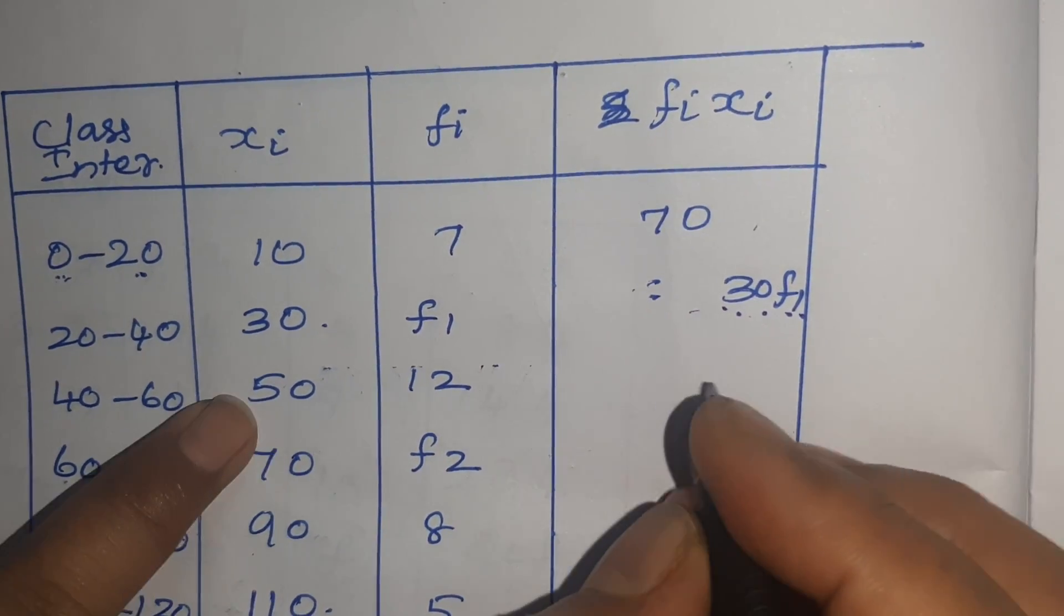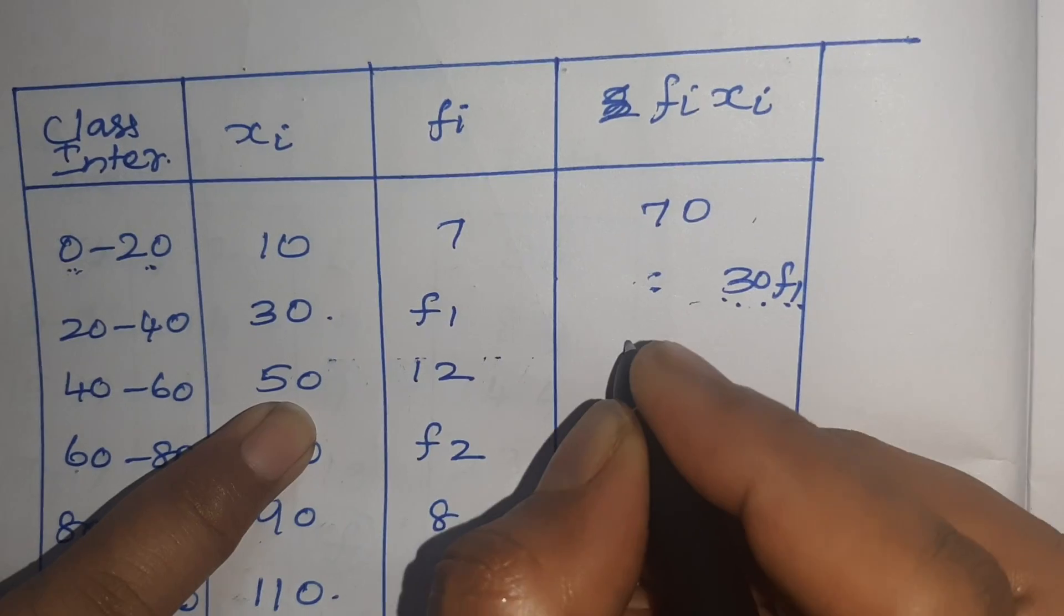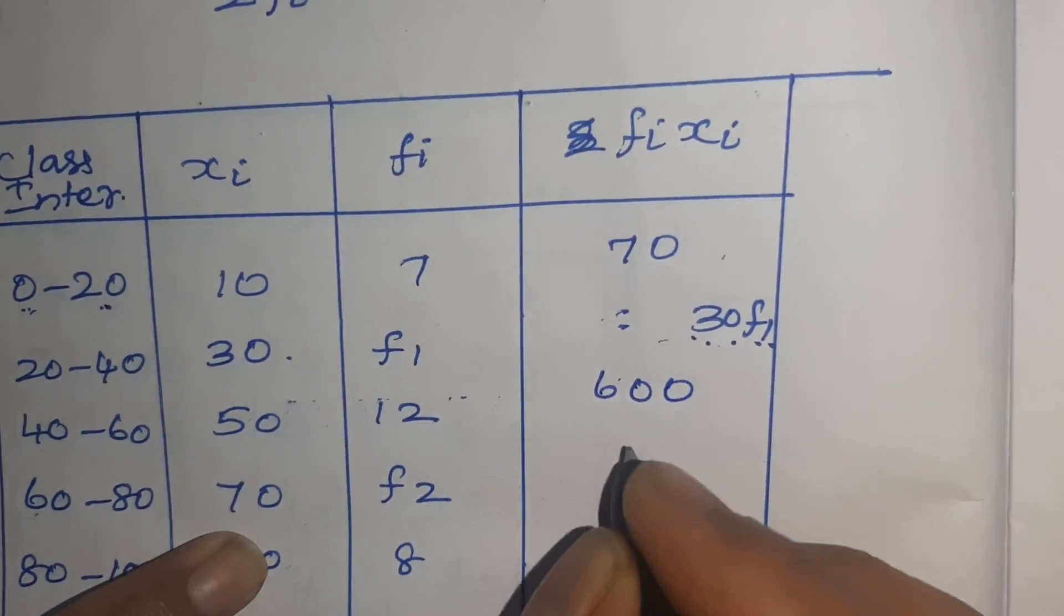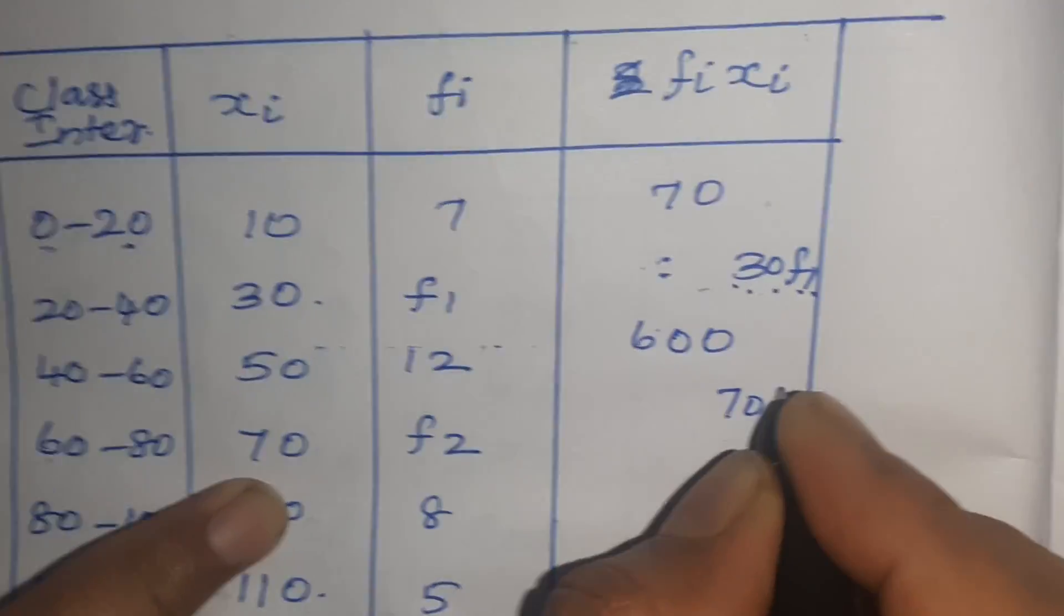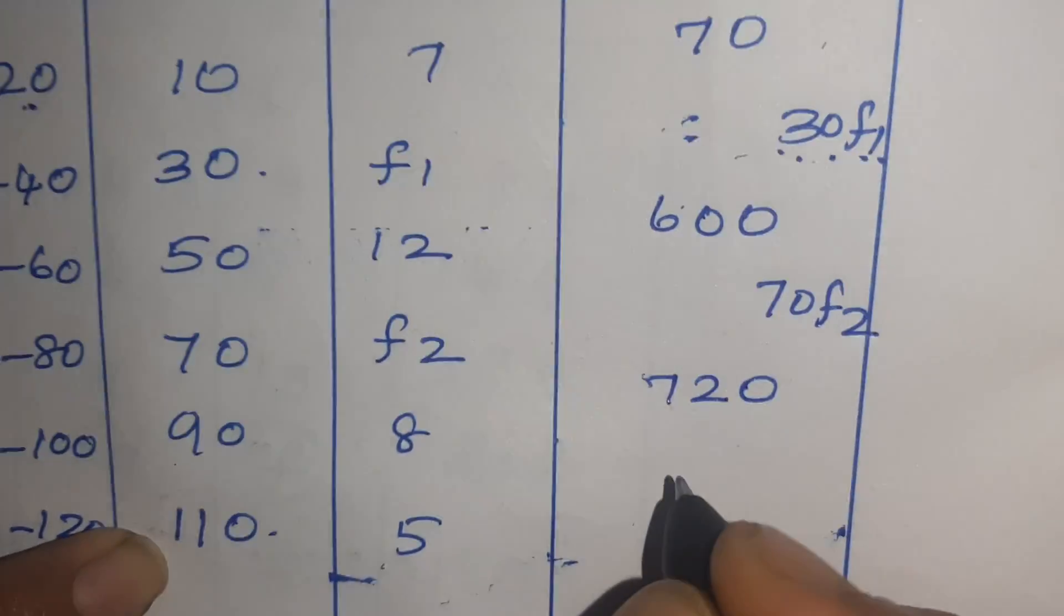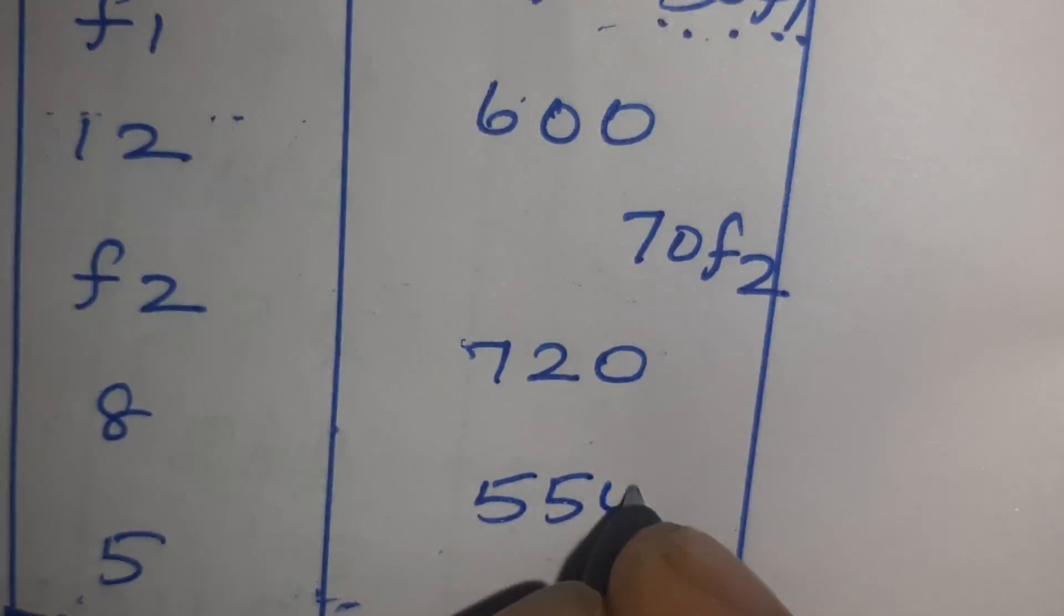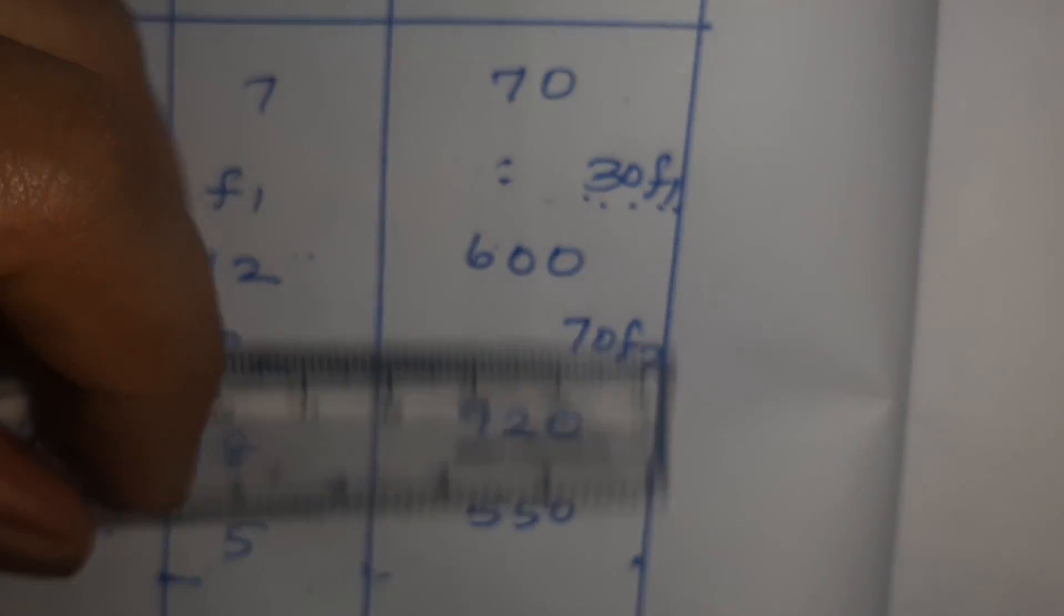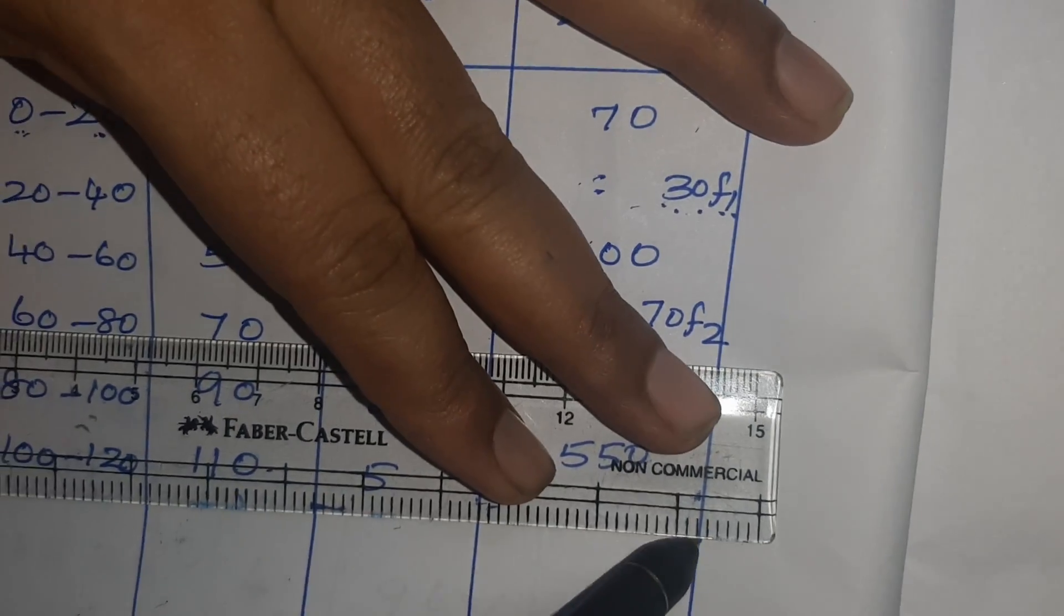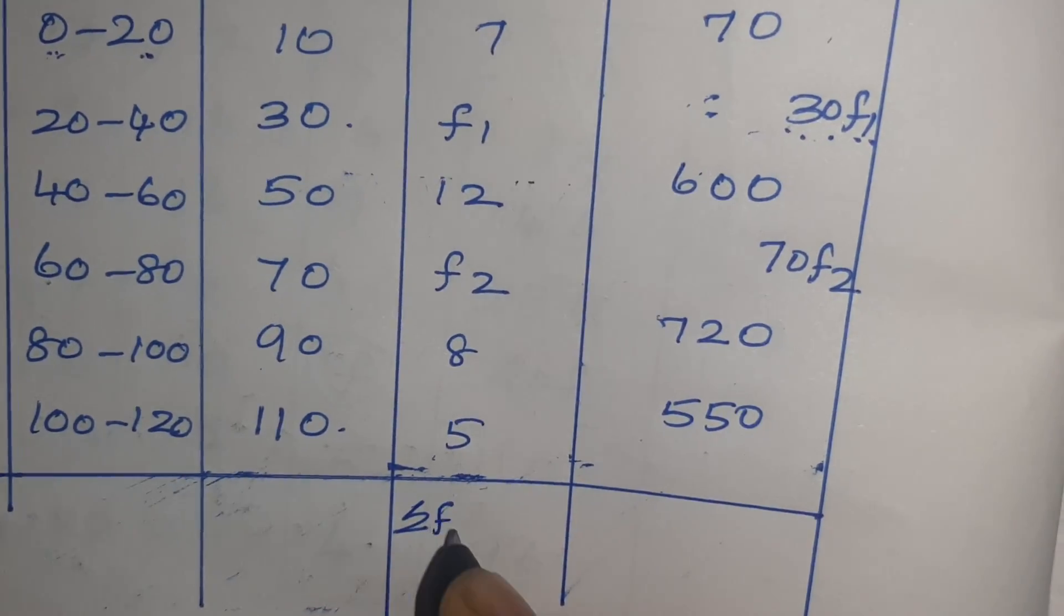Then 50 into 12, 5 twelves are 60, so 600. Then 70F2. Then 90 eights are 720. Then 110 into 5 equals 550. Now we have to draw this line and we have to find sigma Fi.